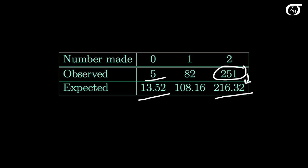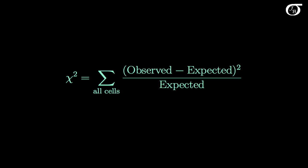Are the observed counts different enough from the expected counts that we can reject the null hypothesis? We're going to use the usual chi-square test statistic: take what was observed, subtract what we'd expect under the null hypothesis, square that difference, divide by the expected, and add that up over all cells.